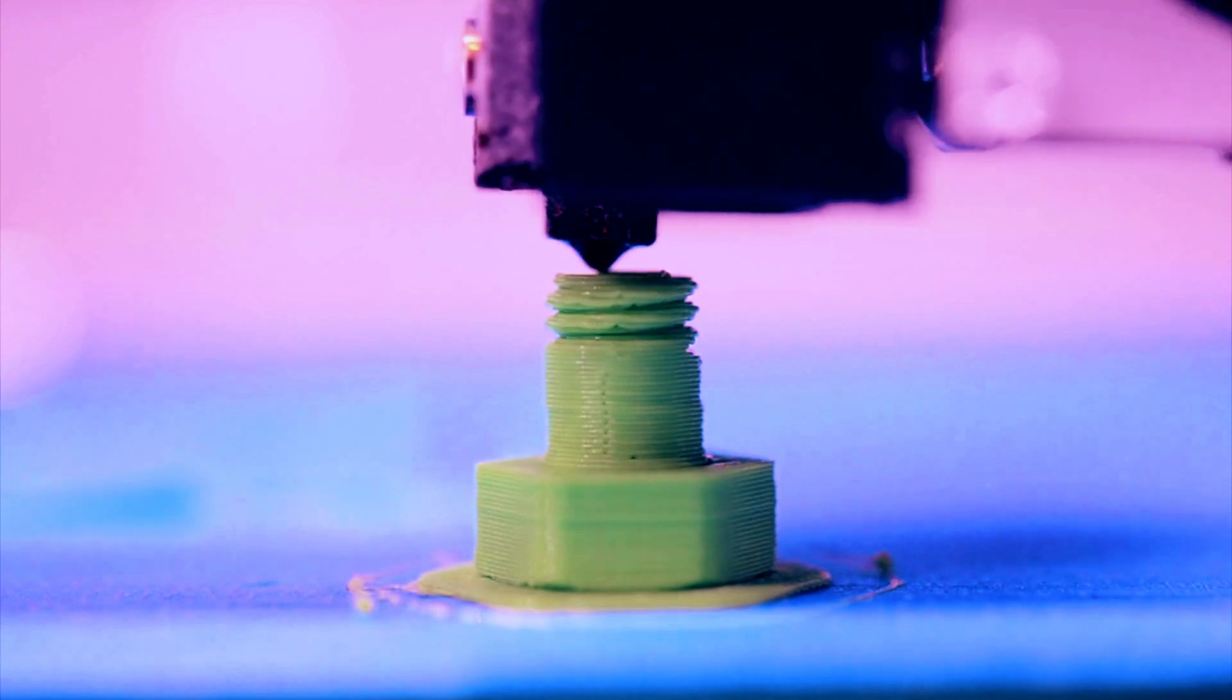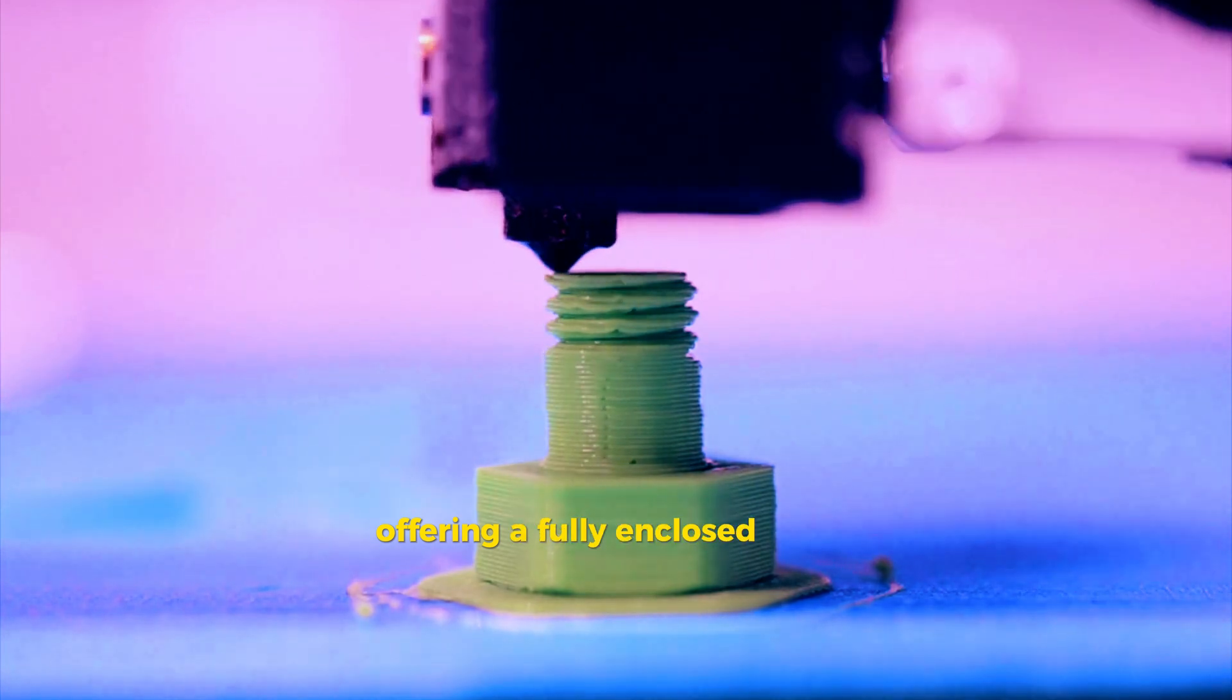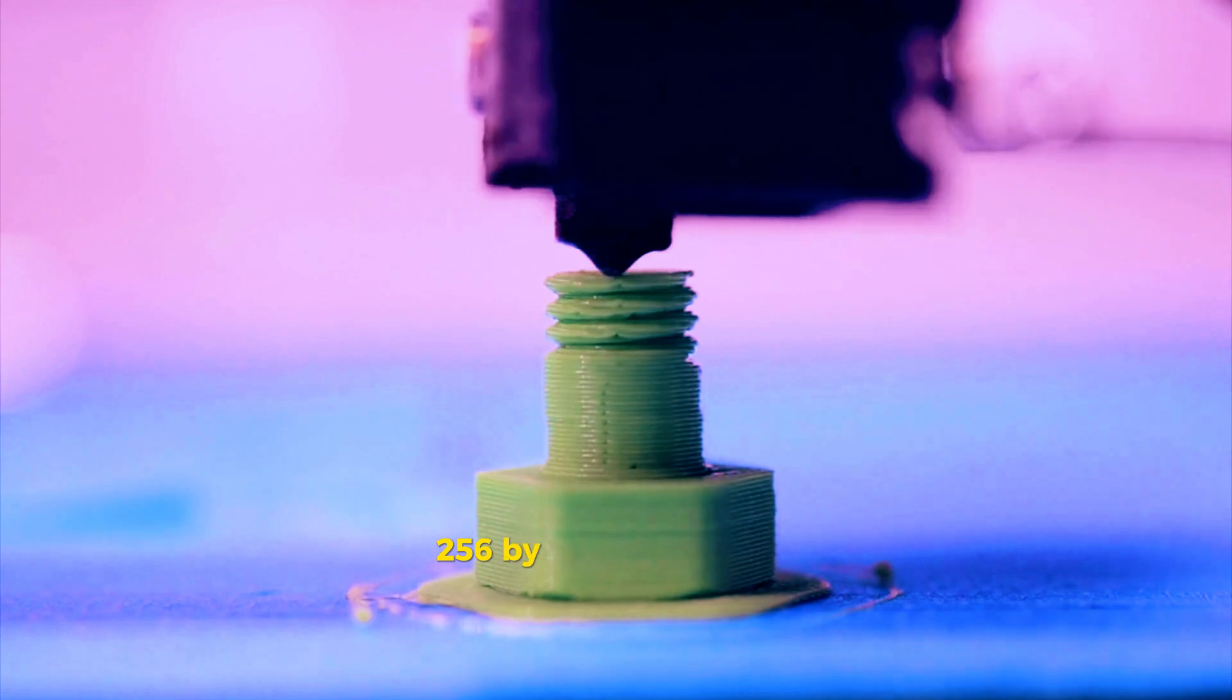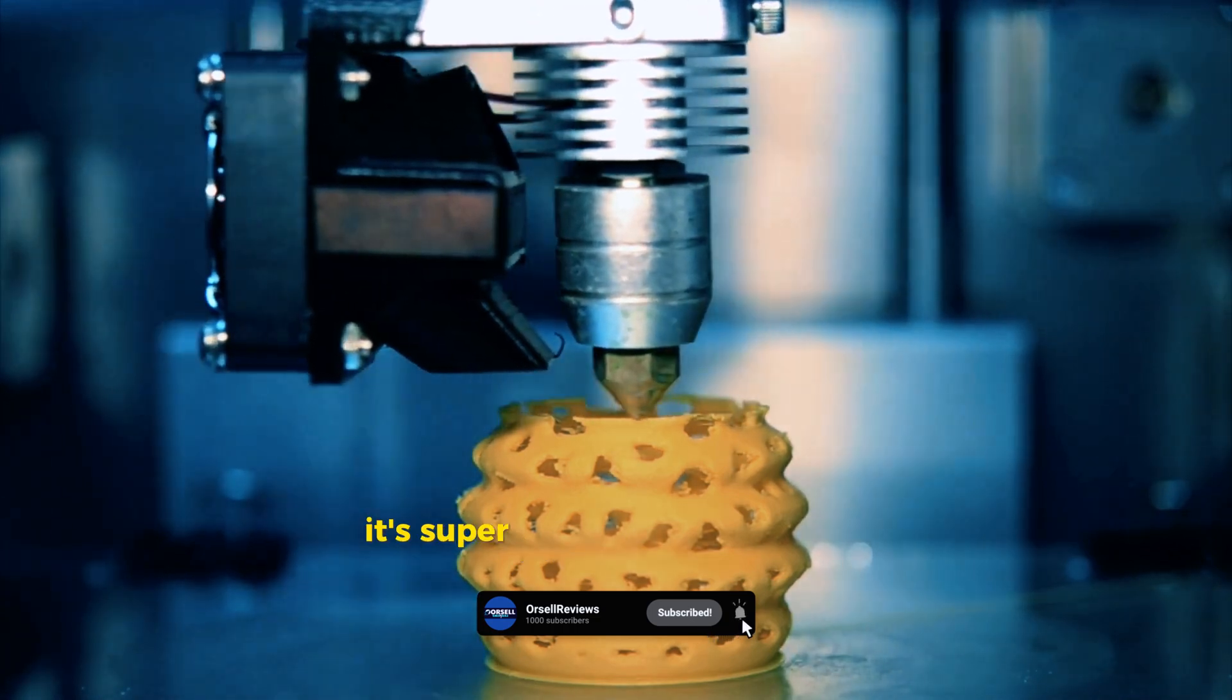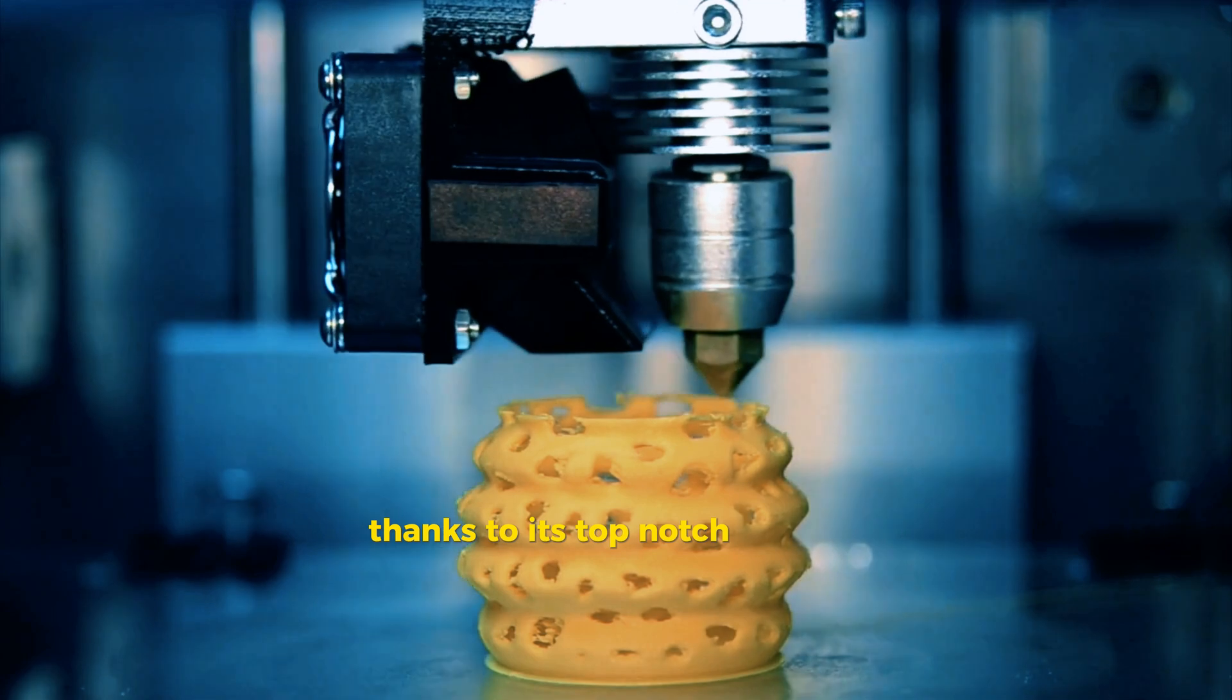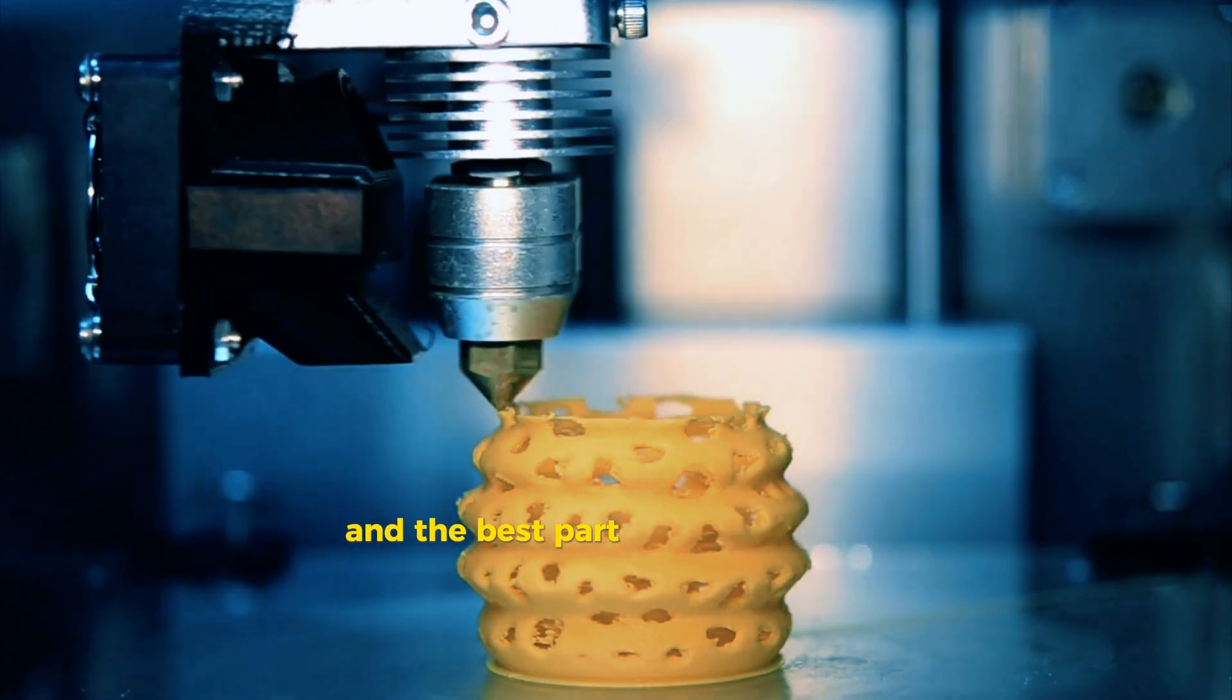First up we have the Bamboo Lab P1S. This bad boy is a game changer, offering a fully enclosed build volume of 256 by 256 by 256 millimeters, which is perfect for keeping your prints stable and consistent. It's super fast and delivers high quality prints thanks to its top-notch cooling system. Plus it's AMS compatible, meaning you can easily use multiple colors, and the best part, all of this comes for just $699.